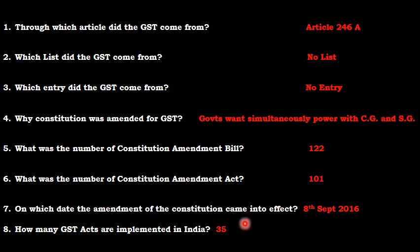Currently India has 35 GST acts. We have 28 states, and 3 UTs which have assemblies are also considered states for GST purposes. So for GST purposes, there are a total of 31 states. Each state has its own separate GST act, called SGST or State GST Act. Then at central level, there is one act called CGST or Central GST Act. To govern all UTs, there is one Union Territory GST Act or UTGST Act. Then there is one IGST Act and one GST Compensation Act. Adding all of these together, India currently has 35 GST acts.